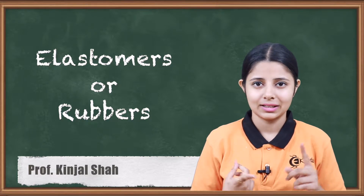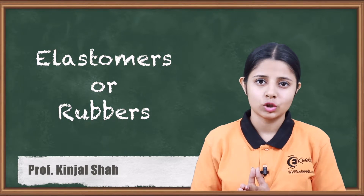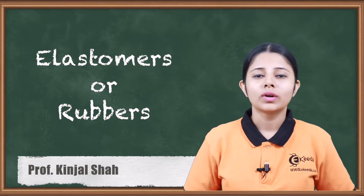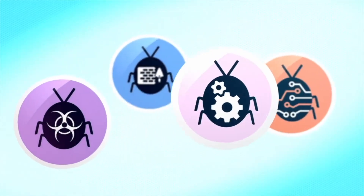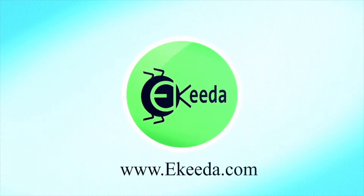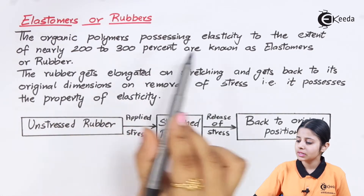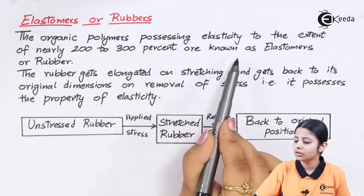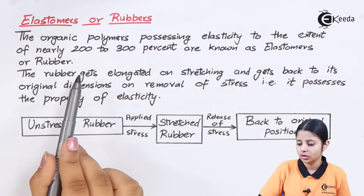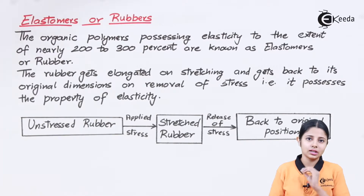We are going to study what exactly is elasticity and how much elasticity is needed for elastomers to differentiate themselves from other solids. The organic polymers possessing elasticity to the extent of nearly 200 to 300% are known as elastomers or rubbers. The property of elasticity comes into the picture here.